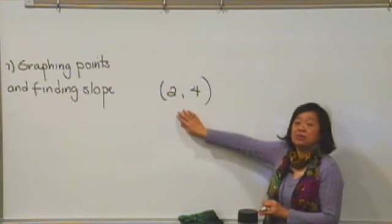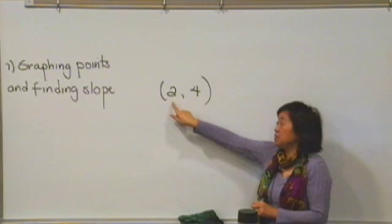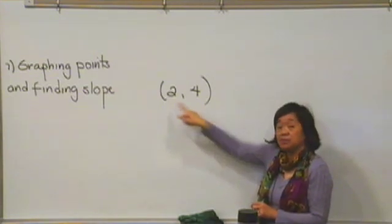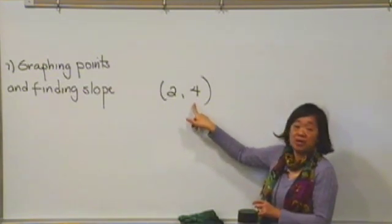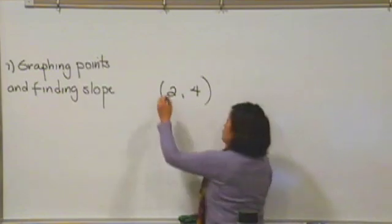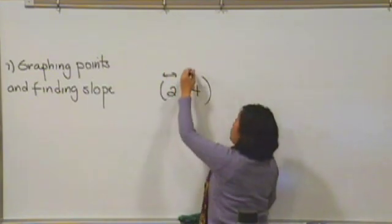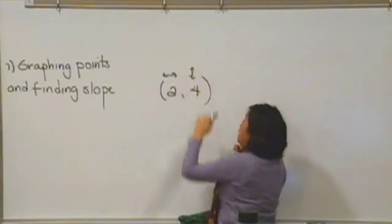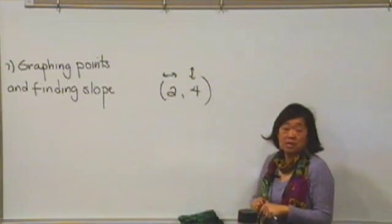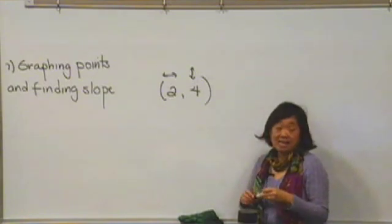Whenever you have a point, it's going to have two numbers associated with it: a first number, which is your x number, and the second number, which is your y number. The first number tells you how to travel right-left, and the second number tells you how to travel up and down. So let's go ahead and see if we can plot the point (2,4) on an axis.